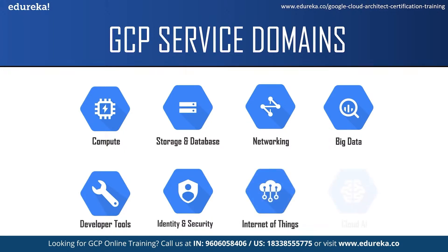The next service domain is GCP IoT. GCP provides an intelligent IoT platform which is scalable, fully managed, and integrated. It lets you connect, store, and analyze data at the edge and in the cloud. Finally, we have Cloud AI. GCP provides fast, scalable, and easy-to-use AI offerings, including an artificial intelligence platform, video and image analysis, speech recognition, and multi-language processing. These were the few core service domains of GCP.